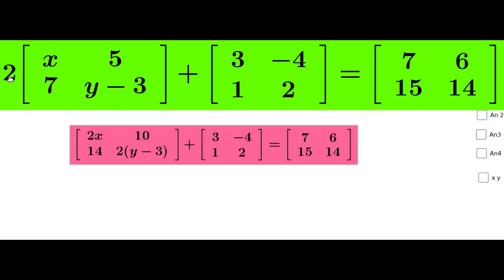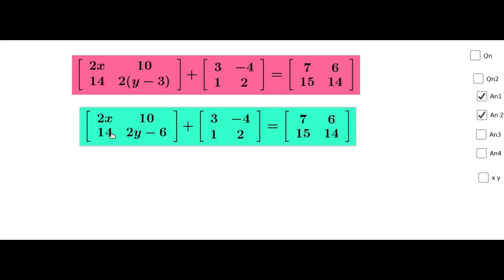We will apply scalar multiplication of 2 on the matrix — multiplying all elements: 2x, 2 into 5 is 10, 2 into 7 is 14, 2 into (y-3) gives 2y-6. This gives matrix [2x, 10; 14, 2y-6] plus matrix [3, -4; 1, 2] equal to matrix [7, 6; 15, 14].